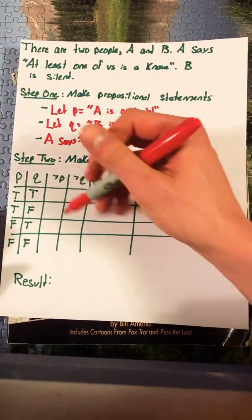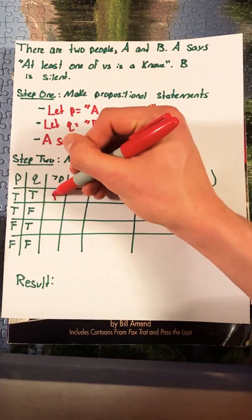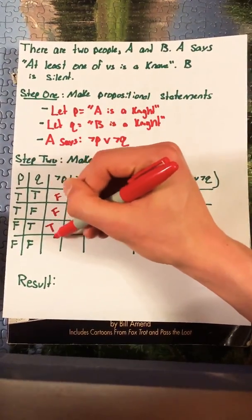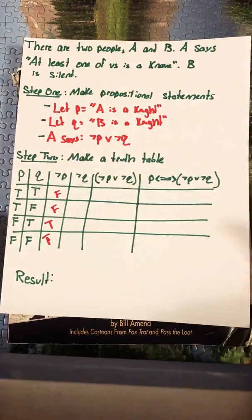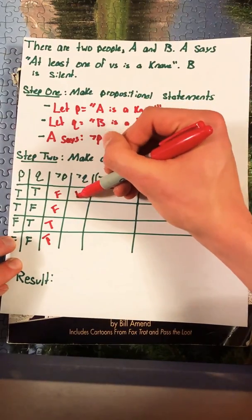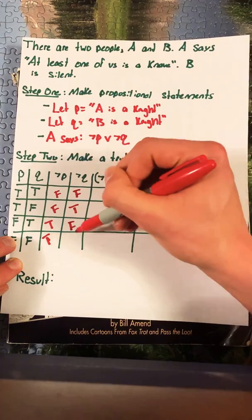So first not P. We know that not is going to be the opposite and so we get false false true true. The same goes for not Q. So we get false true false true.